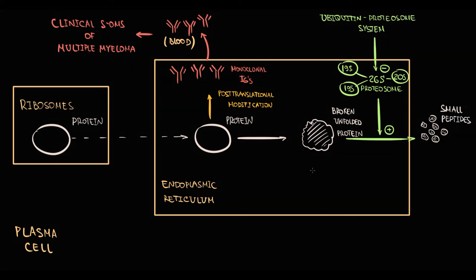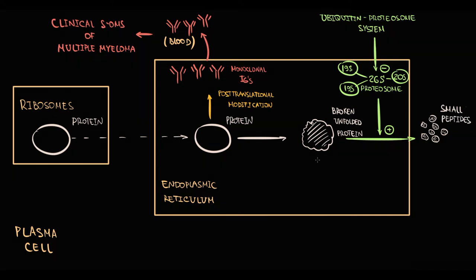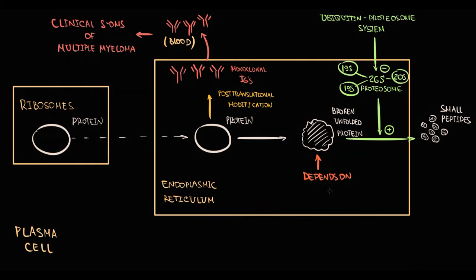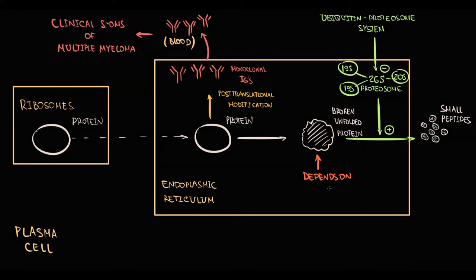The key concept here is that the level of unfolded proteins inside the endoplasmic reticulum is determined by protein production and protein degradation. For proteins production are responsible ribosomes and endoplasmic reticulum. And proteins degradation is provided by the proteosome complex that is controlled by the ubiquitin proteosome system.